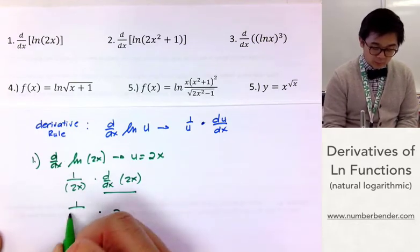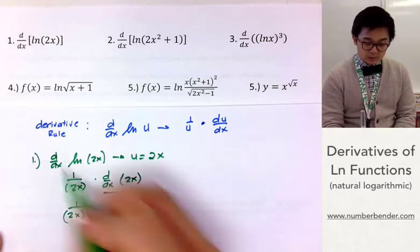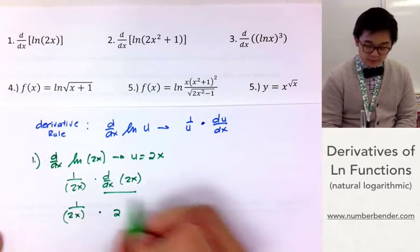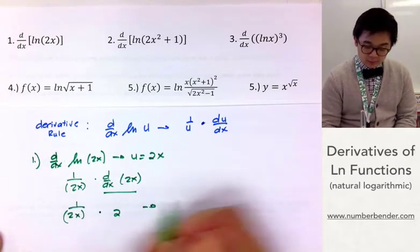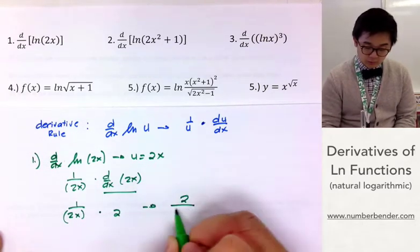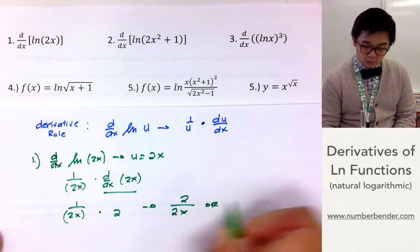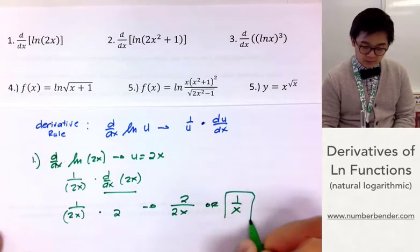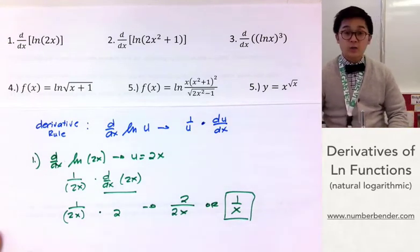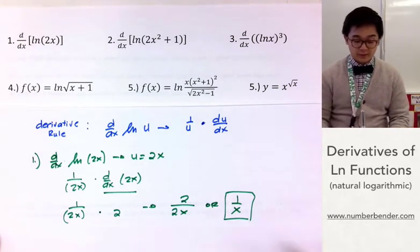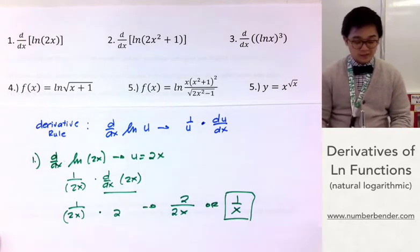Going back to 1 over 2x, the derivative of ln(2x) is simply going to be 2 all over 2x, or 1 over x. This is how we use the derivative rule for ln u.